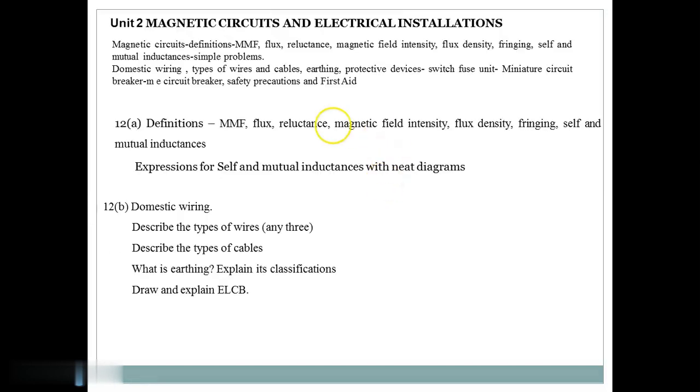12B Question is from Electrical Installations. They are Domestic Wiring. Explain about domestic wiring, describe the types of wires, describe the types of cables. If you know the types of wires, it is easy to understand types of cables. Minimum three types to be read. What is Earthing? Explain its classification and draw and explain about ELCB, that is Earth Leakage Circuit Breakers. These are all expectations from 12B.